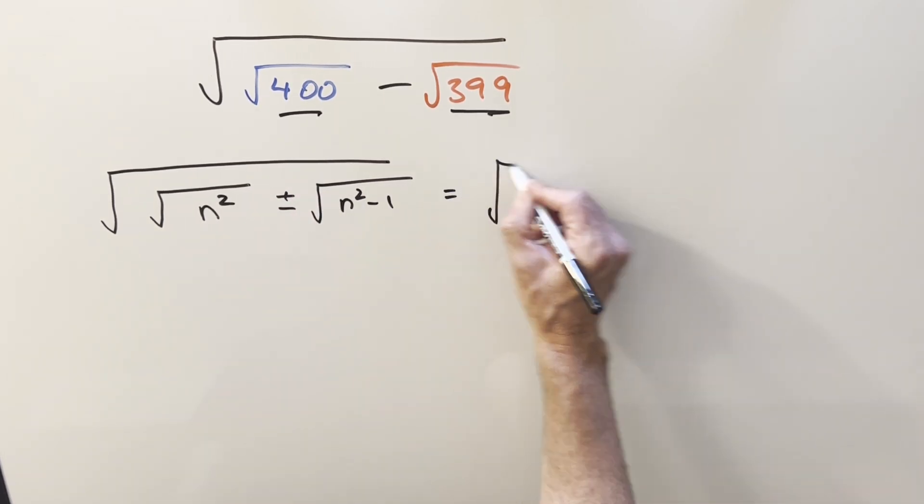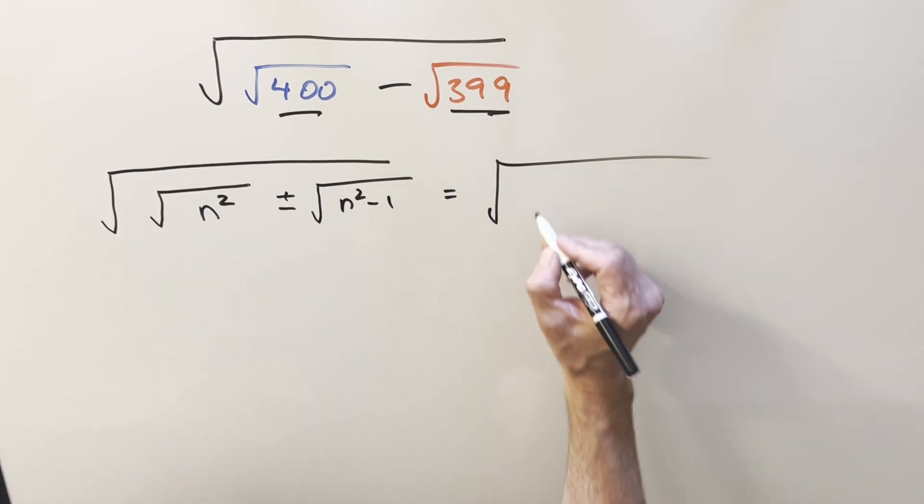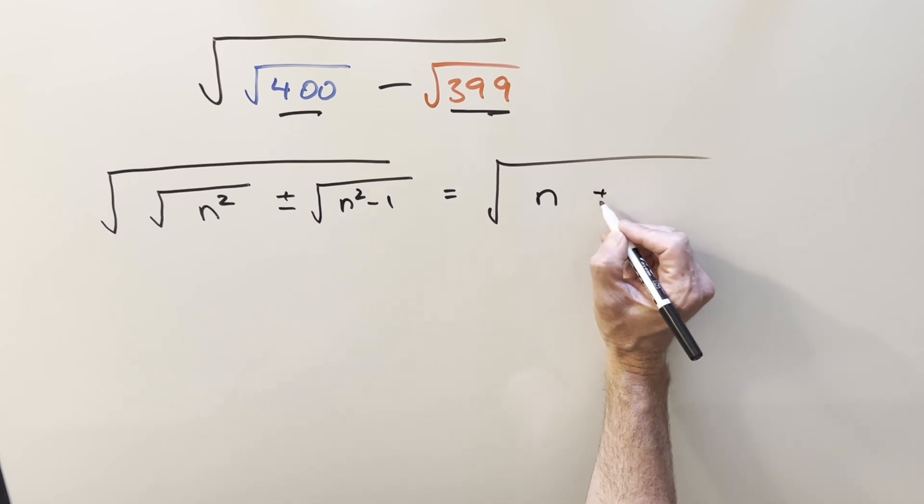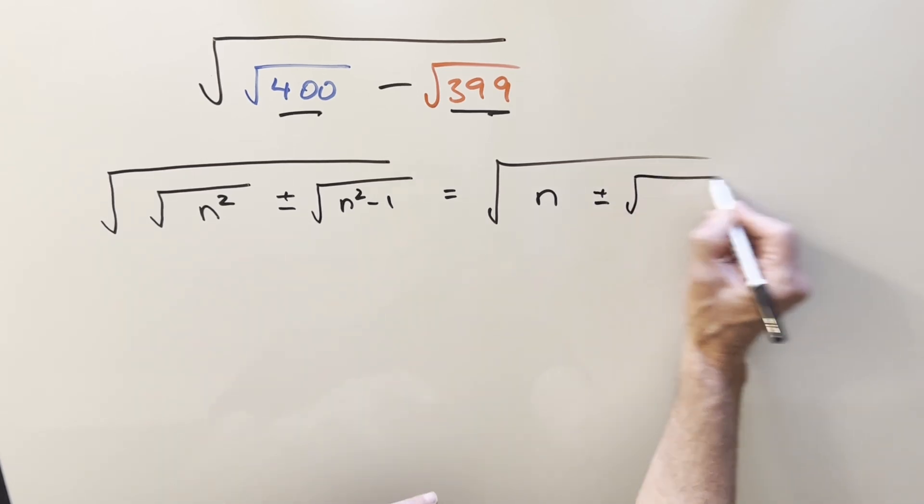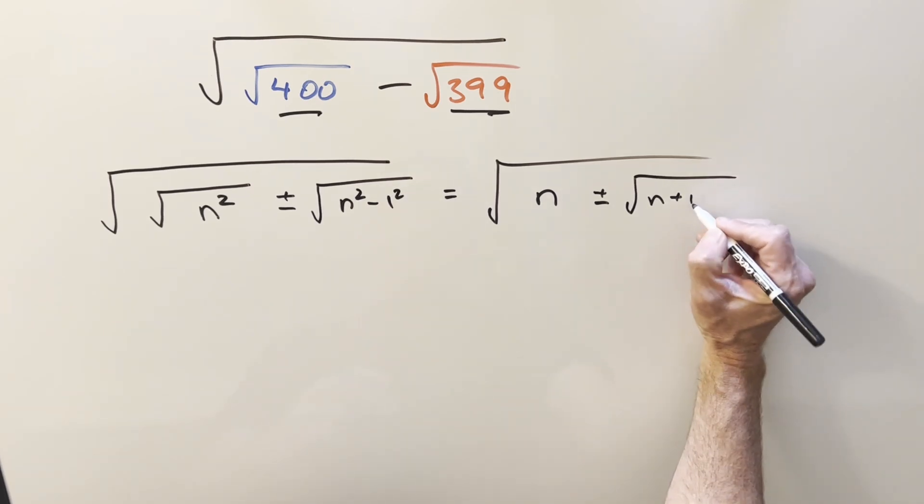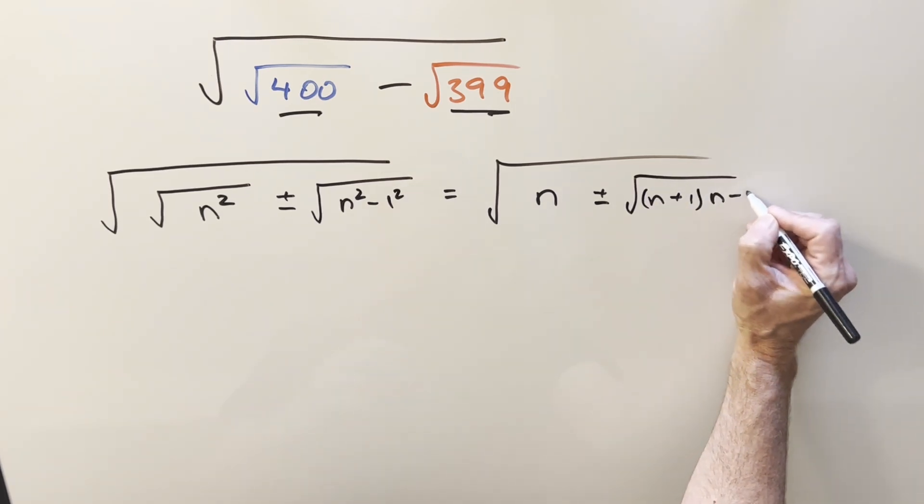So then clearly we can reduce it. We've got our square root. This can be just n. We don't need an absolute value on it, as n is always positive. Here, we're going to have plus or minus. This thing we can factor as a difference of two squares. We can write it as n plus one and n minus one.